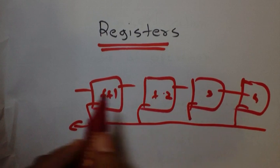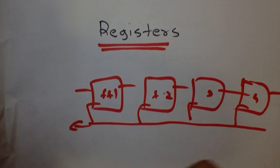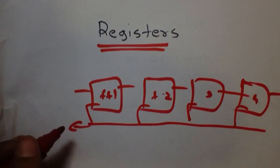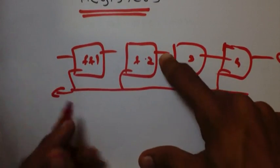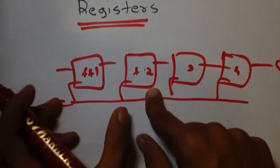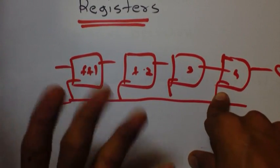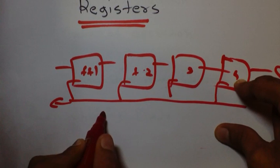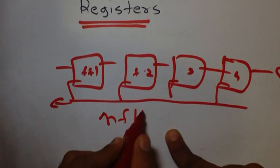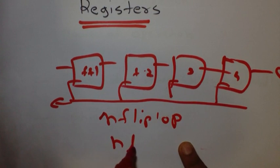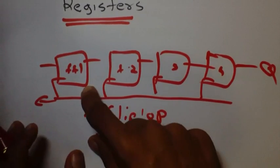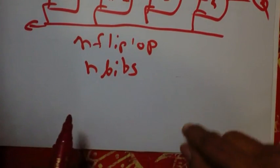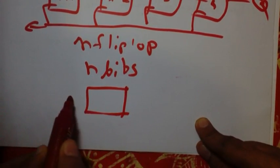The serial output will be Q. There are many types: buffer register, shift register, serial in parallel out, serial in serial out, and so on. The basic definition of a register is that it is a set of flip-flops. If we want to store four bits of data, we need four flip-flops. For n bits we need n flip-flops. Here with four flip-flops we can store four bits.